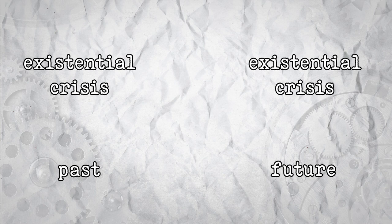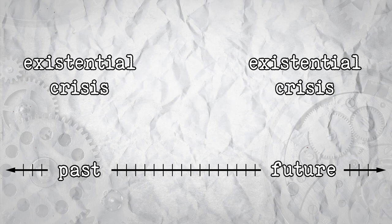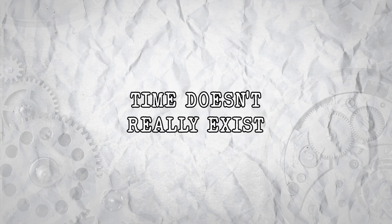But McTaggart argues this doesn't work either. In order to explain that succession, we need to invoke new times, and on and on until it becomes an infinite regress and a vicious cycle. Therefore, because the only series that's necessary to time is contradictory, time doesn't really exist.